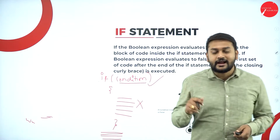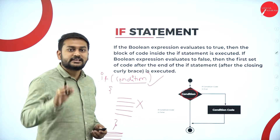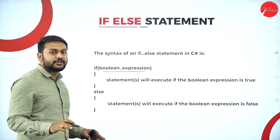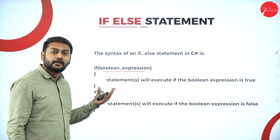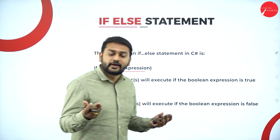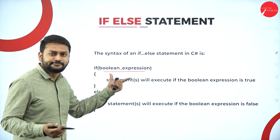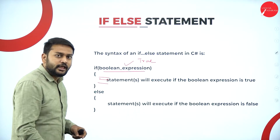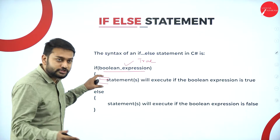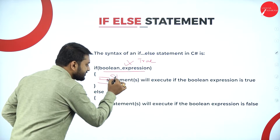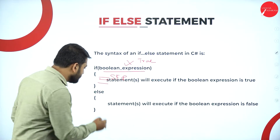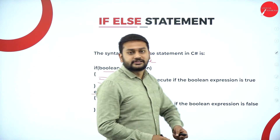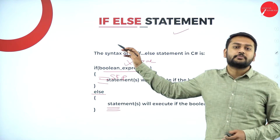There's a problem though — I said if this condition is true then execute, but what if the condition is false? For that, I have the next type: if-else. Here I have a boolean expression — it gives me a boolean value, true or false. If the condition is true, the code inside the if-block executes; if false, I come to the else part and execute those statements.